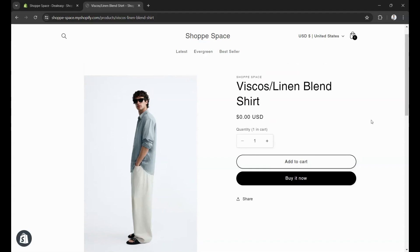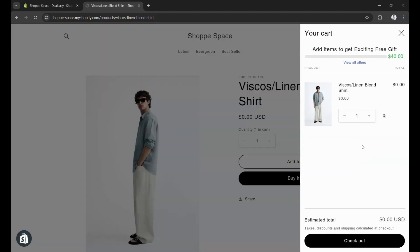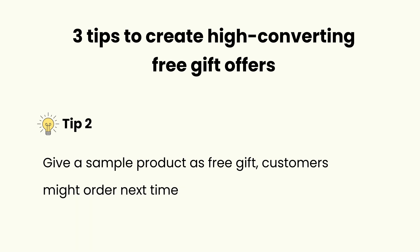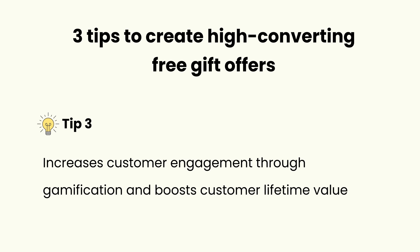You could also embed the progress bar in the cart drawer like this. And here are the 3 secret tips. Tip 1: You can use this strategy to clear out perishable inventory in your stock or items that aren't selling anymore. Tip 2: You can give a sample product as a free gift and customers might like it and order it next time. Tip 3: You can use the free gift strategy to increase customer engagement through gamification and boost customer lifetime value.